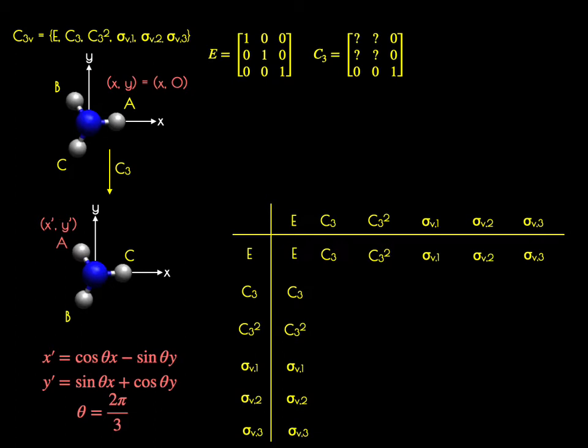Plugging those values in, we get X prime equaling negative one half X minus root 3 over 2 Y and Y prime equaling root 3 over 2 X plus negative one half. Transcribing this into our C3 rotational matrix, we get this.